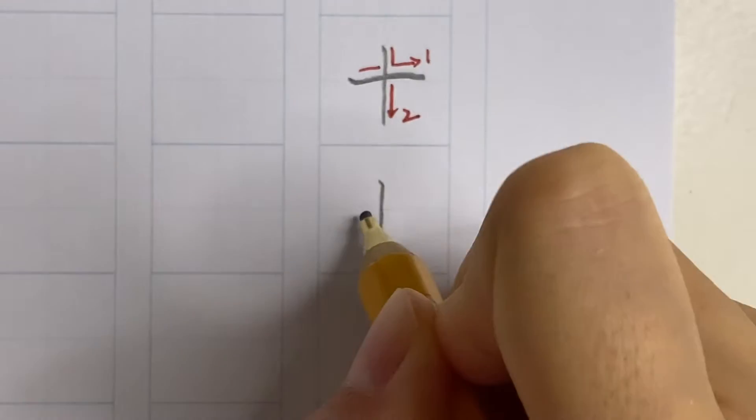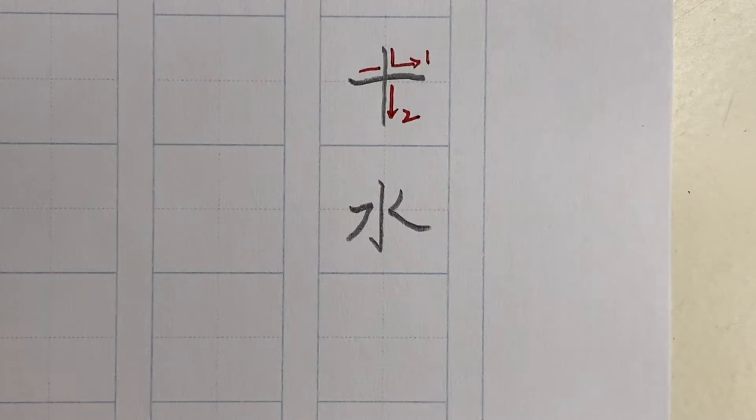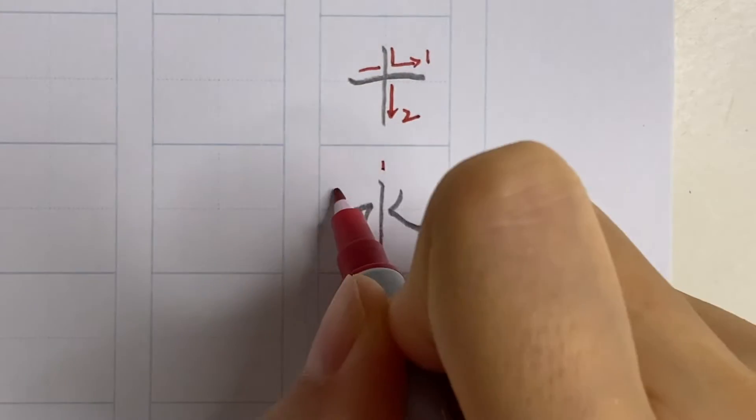For symmetrical characters, we have to write the middle part first, followed by the left part and the right part.